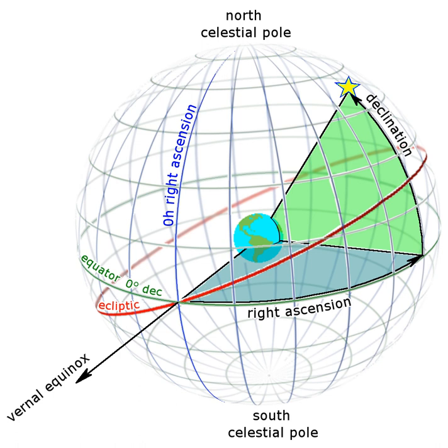Therefore, equatorial coordinates are inherently relative to the year of their observation, and astronomers specify them with reference to a particular year, known as an epoch. Coordinates from different epochs must be mathematically rotated to match each other, or to match a standard epoch.